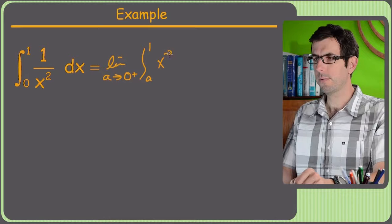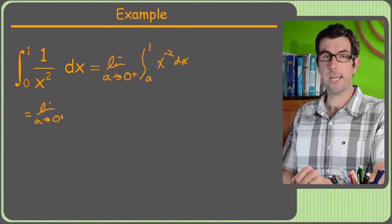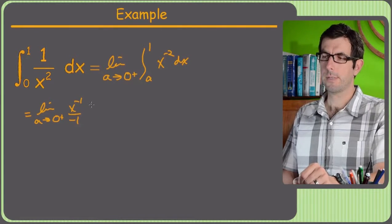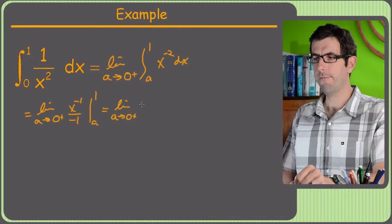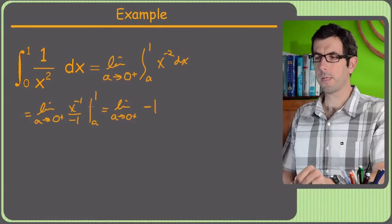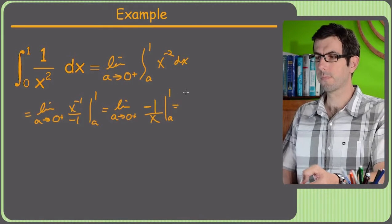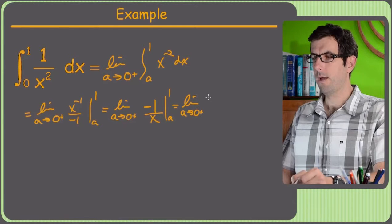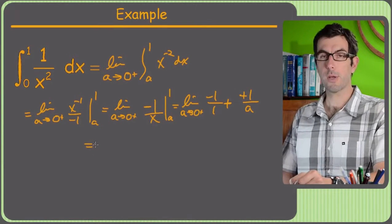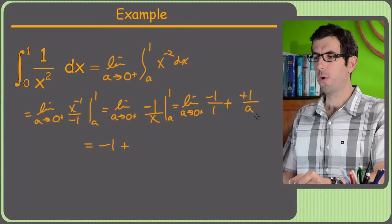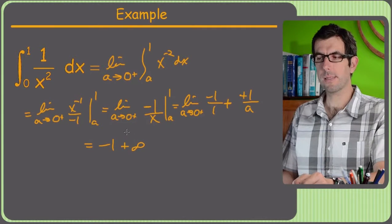I'll rewrite this as x to the minus two dx. So we've got the limit as a approaches zero from the right. The integral of x to the minus two is x to the minus one over negative one, evaluated from a to one. Plugging in one gives negative one over x — so negative one — minus negative one over a, and of course those negatives cancel. So we get negative one plus one over a. When you take the limit of one over a as a approaches zero, that's undefined — it's infinity. This limit does not exist.